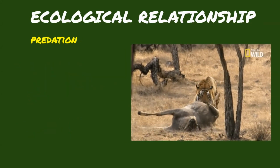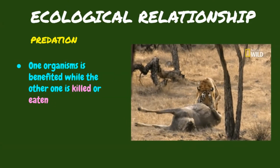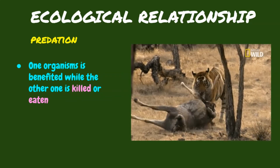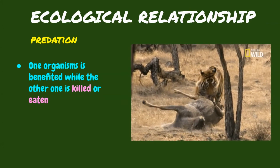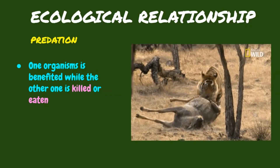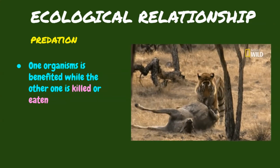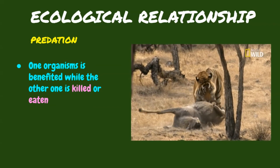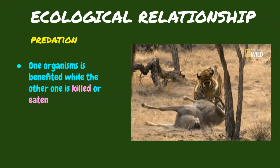Another relationship that exists in the ecosystem is the food-getting relationship. One organism is benefited while the other one is killed and eaten. This relationship is called predation. An animal that kills and eats other animals is called the predator. An animal that is killed and eaten by its predator is called the prey. The prey are less powerful than the predator that eats them. In a given community, predators compete with other predators for prey. In the wild, a predator may also be prey to another predator. This means that while an animal hunts and feeds upon another animal, it can also become prey to a larger and stronger predator.